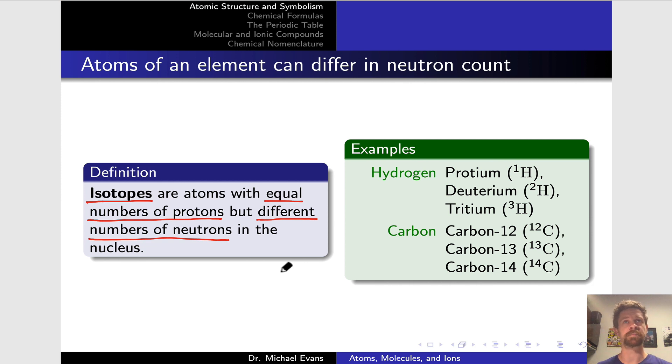Isotopes are very common. We often find elements in nature as mixtures of different isotopes, and multiple isotopes of a particular element can be stable in many cases. I've included two types of examples on the slide: isotopes of hydrogen and carbon.